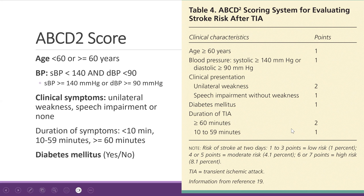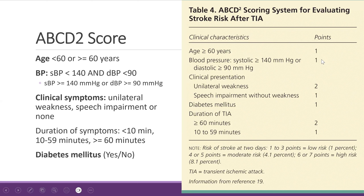If the patient scores 1 to 3, the risk of stroke is around 1% — low risk. If the score is 6 to 7, the patient is high risk with an 8% risk of stroke in the next two days. A stands for age: if over 60, one point. Blood pressure systolic more than 140 or diastolic more than 90, one score. Clinical presentation — unilateral weakness — two scores; speech without weakness, one. Diabetes, one. And duration of symptoms. The importance of this score is to decide the need for admission versus discharging the patient for outpatient investigation.